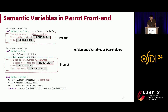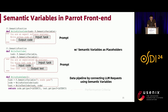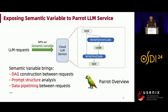Developers can use a Pythonic way to orchestrate multiple LLM semantic functions and connect multiple LLM requests using semantic variables. They can fetch the final result and annotate their performance criteria as the end-to-end optimization goal. By exposing semantic variables through the Parrot API, the LLM service can understand the DAG, the prompt structure, and the data pipelining between requests, which enables many optimizations.